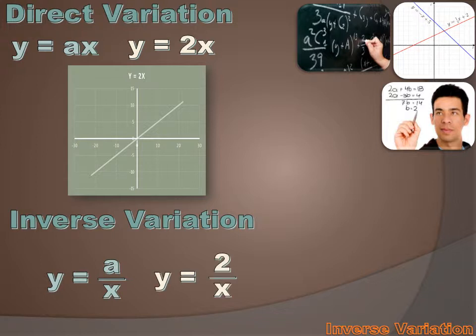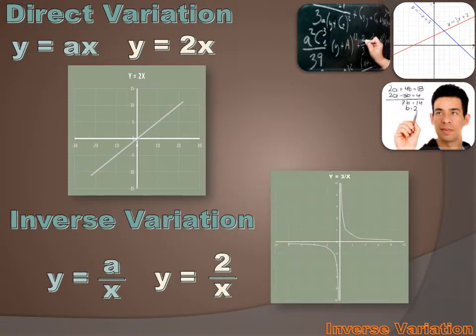Let's look at an example. Let's say we chose to look at y equals 2 divided by x. And we were going to graph that. It'd look like this. That's the graph of an inverse variation.